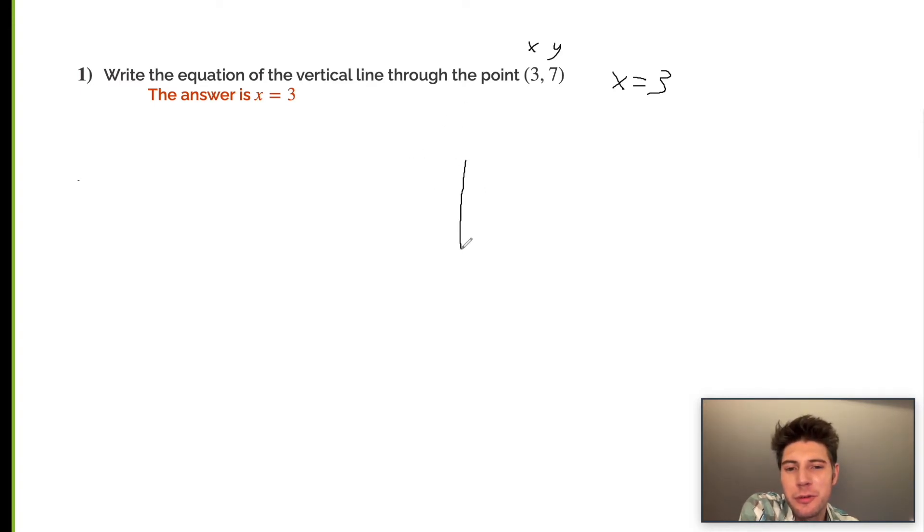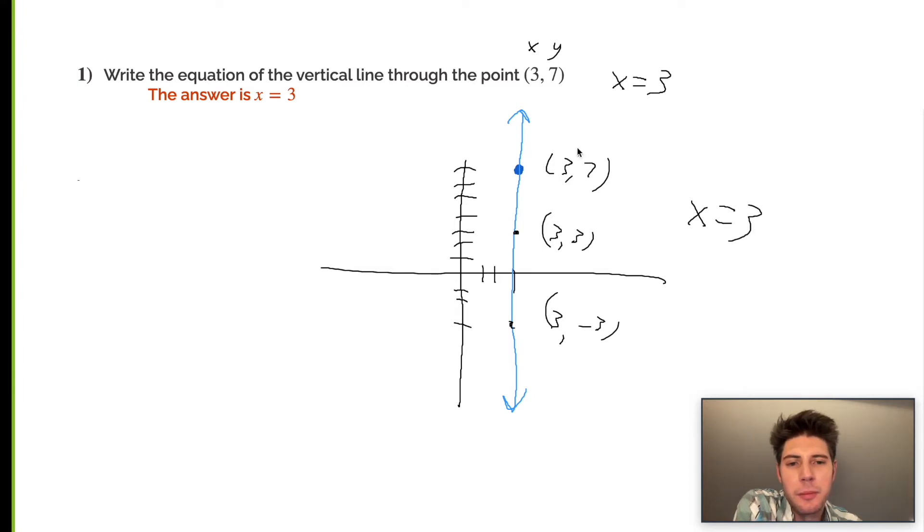I can also show you the longer way to do it, which is kind of cool because it's a visualization for what's actually happening. If we plot the point (3,7) right here and we want to know the vertical line going through it, what's the equation of this blue line right here? That's what we're trying to solve for. So this point is (3,7), and we can mark some other points if we wanted: (3,3). Same thing I pointed out before, these all have the same x-value, so really we would just say x equals three because that's what each of these points has in common on that line. Either way, whatever way you want to think of it, x equals three is the correct answer.